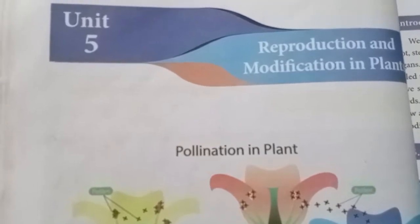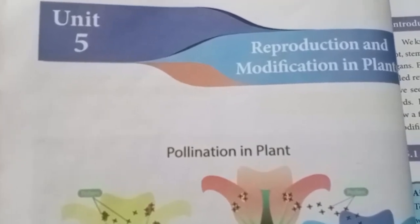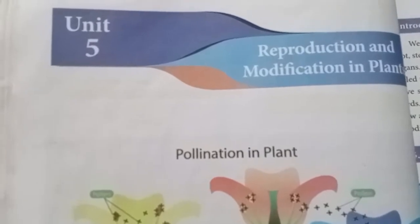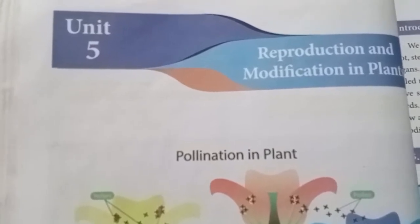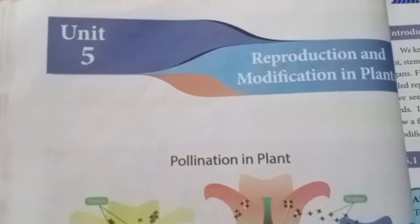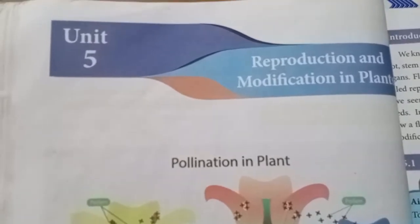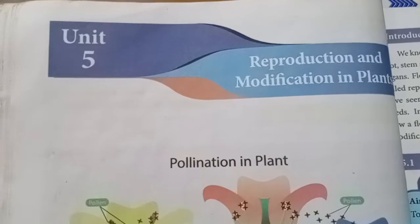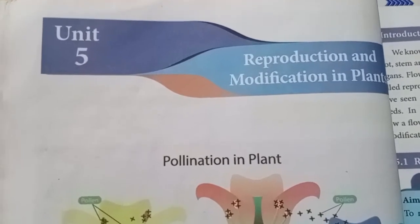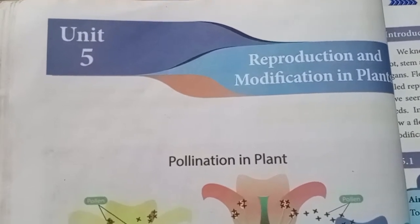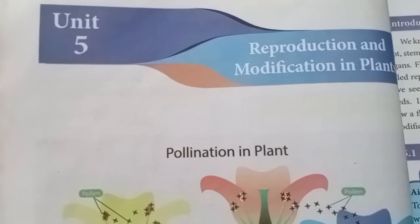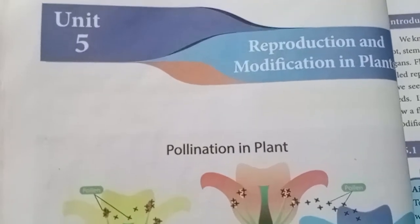Regarding modifications in plants: some plants' leaves are modified into spines or thread-like structures known as tendrils. Some plants' stems are modified into thorny structures. There are a lot of modifications in plants. Let's see the book back evaluations from this lesson.